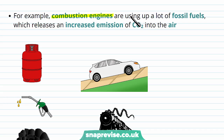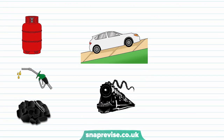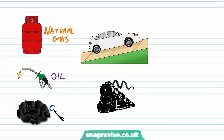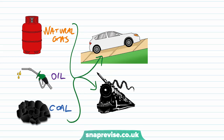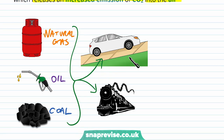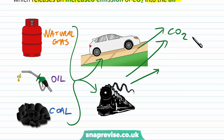For example, combustion engines are using lots of fossil fuels, which always releases increased emissions of CO2 into the air. There are three types of fossil fuel: natural gas, oil, and coal. For the last couple of hundred years, these have been used to fuel lots of different machines, and as these machines run, they release CO2 into the atmosphere.